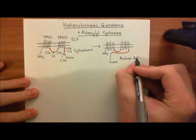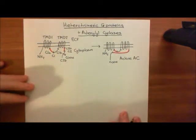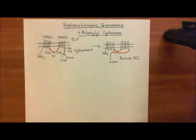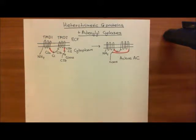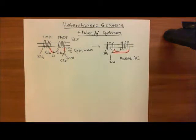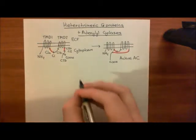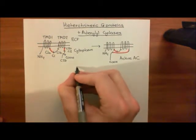Adenylyl cyclases are often abbreviated to ACs. Once you've got this active enzyme, what does it actually catalyze? It catalyzes the cyclase reaction — the conversion of adenosine triphosphate, ATP, into cyclic adenosine monophosphate, cAMP, and pyrophosphate.